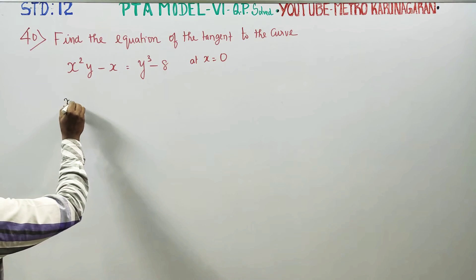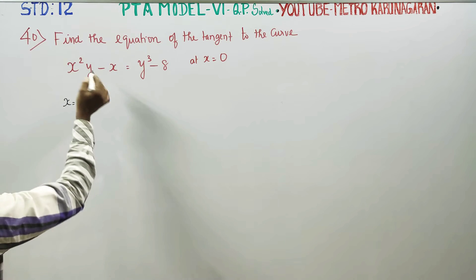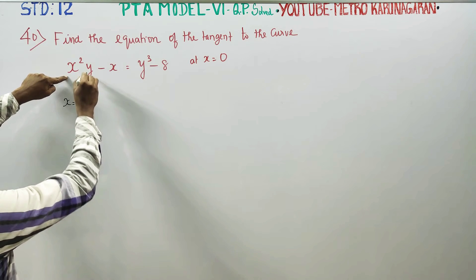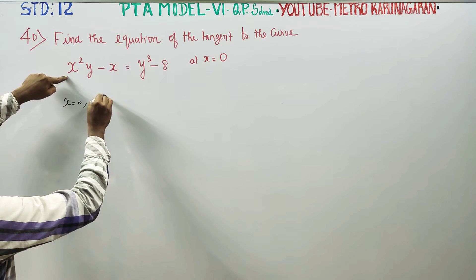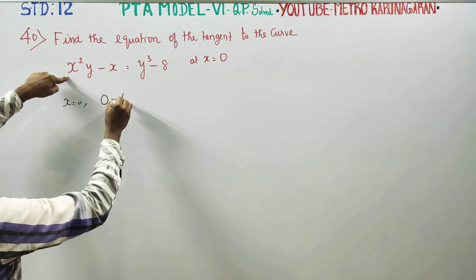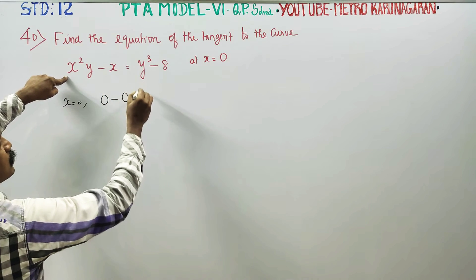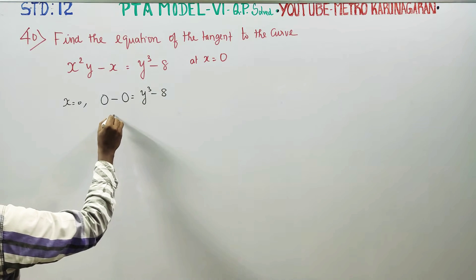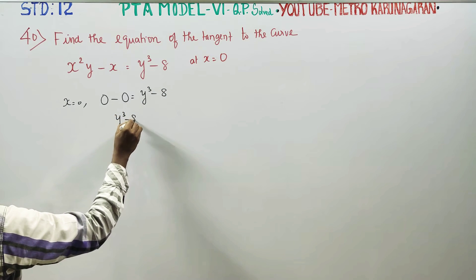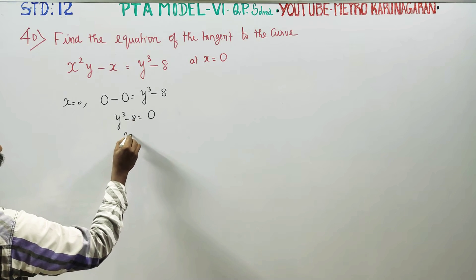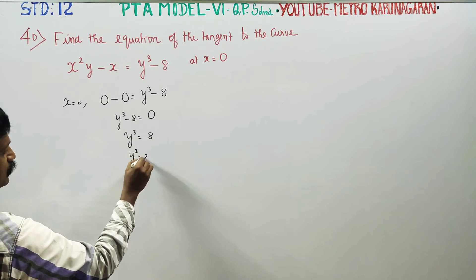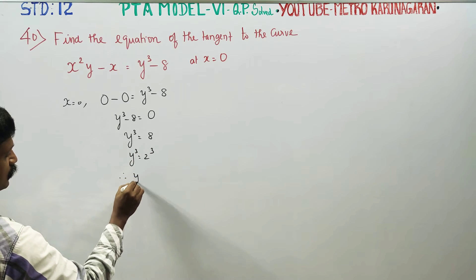x is equal to 0. You can substitute y value. Substitute 0 squared, y becomes 0 minus 0 is equal to y cube minus 8. y cube minus 8 is equal to 0. y cube is equal to 8. y cube is equal to 2 cube, y is equal to 2.